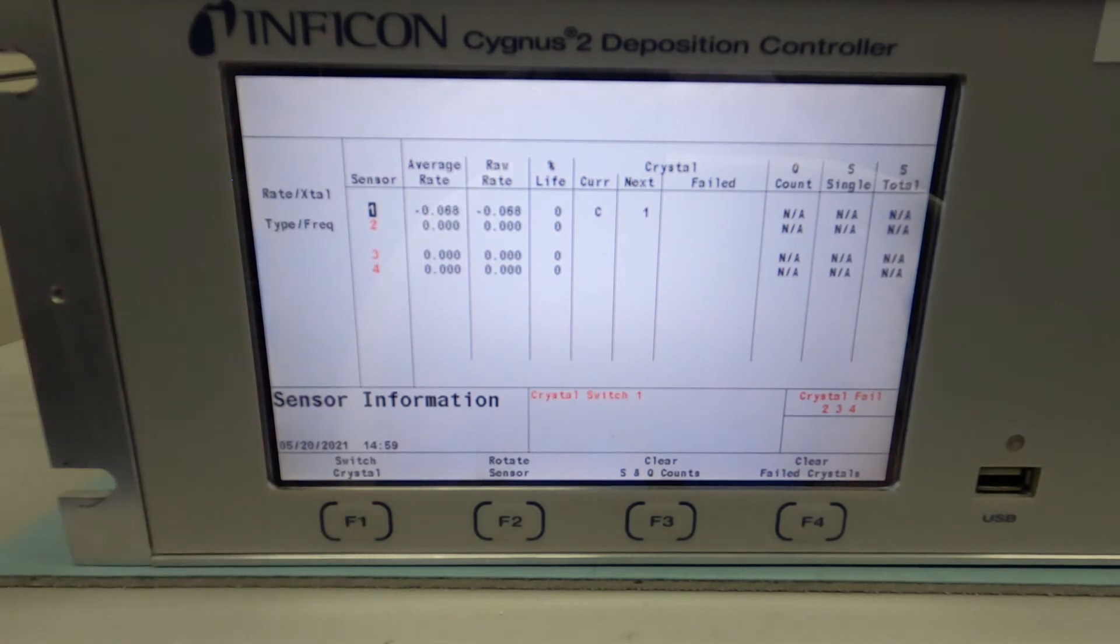The crystal position 12 is displayed as the assumed current position until the changeout is complete and a rotate head or crystal switch function is performed. At the end of the rotate head function, the sensor will be at position number 1.